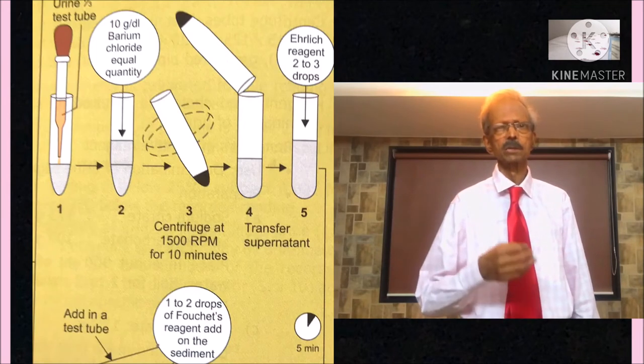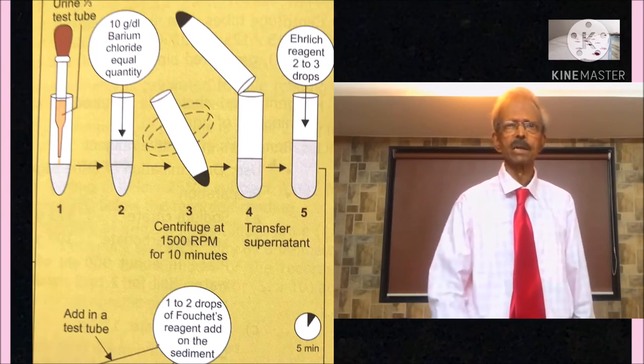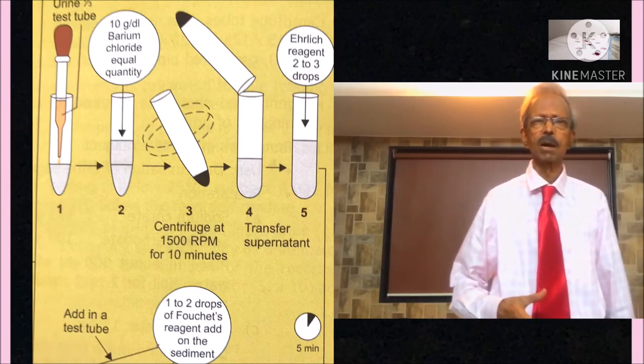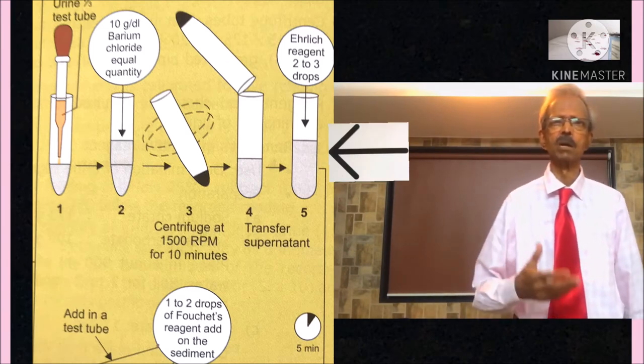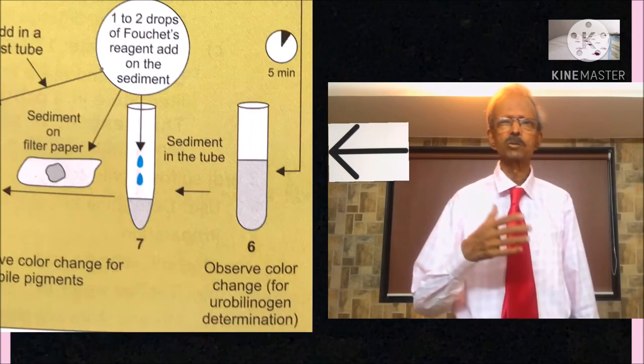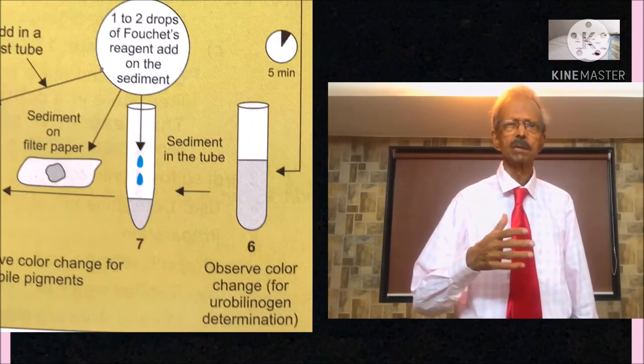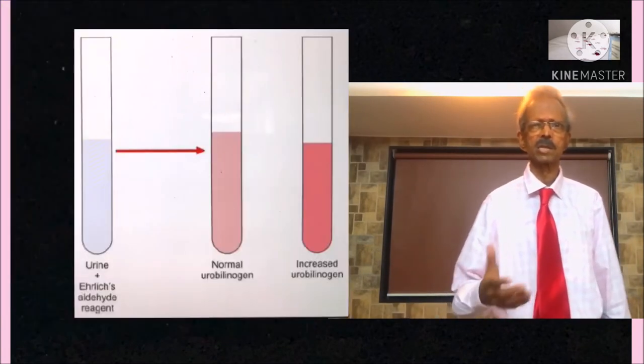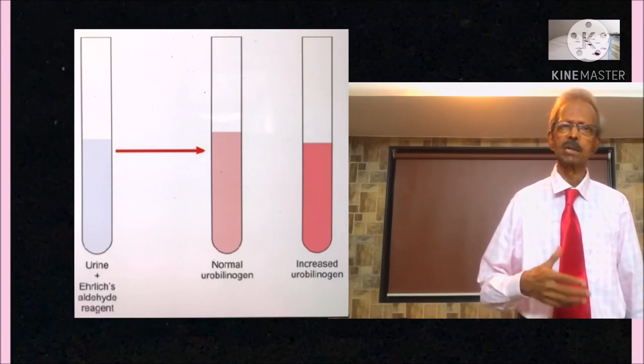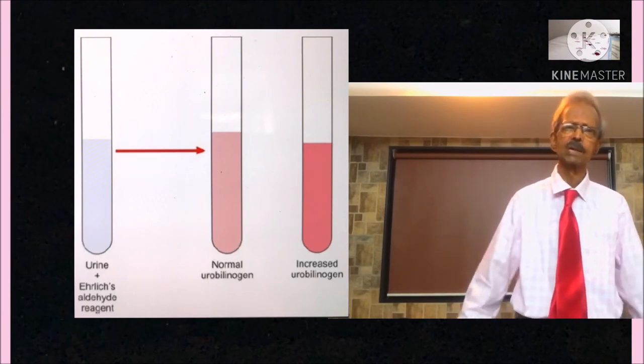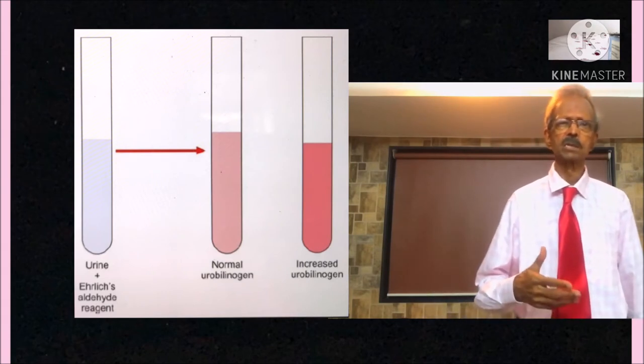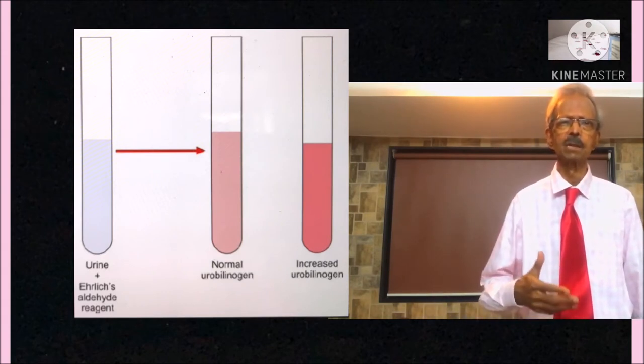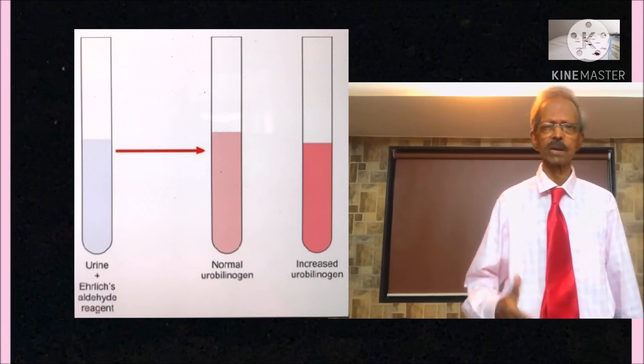Now for the determination of urobilinogen to the supernatant, add 2-3 drops of Ehrlich reagent and observe the color. If color changes to pink, that means urobilinogen is present. And development of dark pink color means increased amount of urobilinogen in urine.